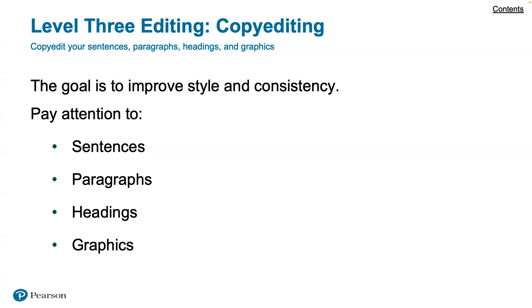For headers, they should be easy to understand and consistently used. Do headers reflect the information that follows? Do headers make documents scannable and highlight important information? Are there clear levels of headings? For graphics, make sure they support the written text, check them for accuracy, does each graphic tell a simple story, does each graphic support written text without replacing it, and are graphics clearly titled and referenced by number in the written text?